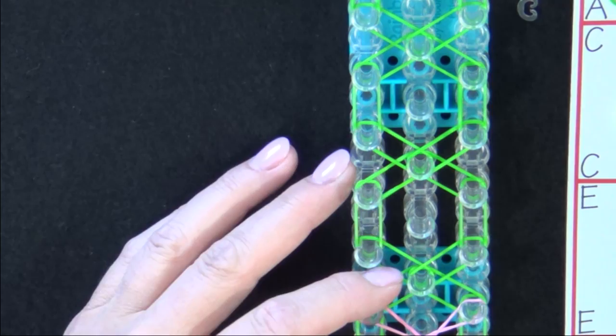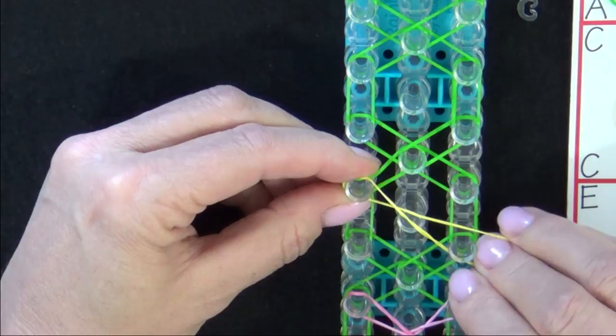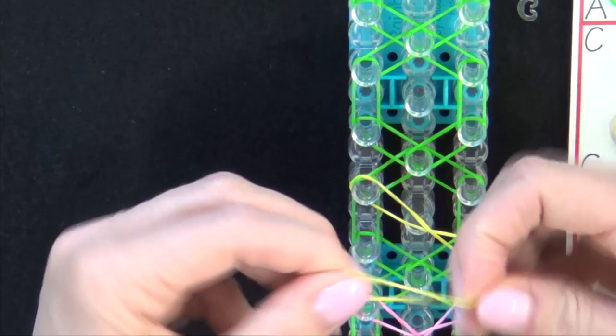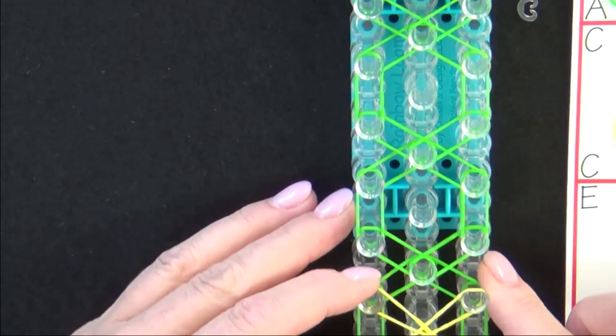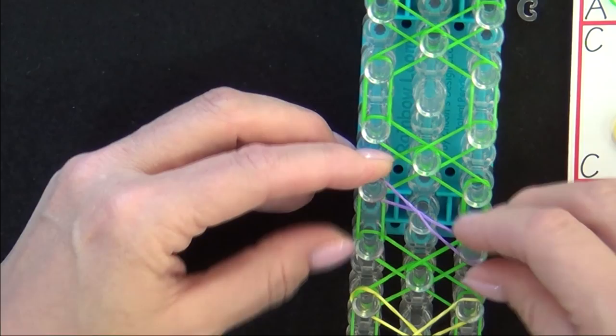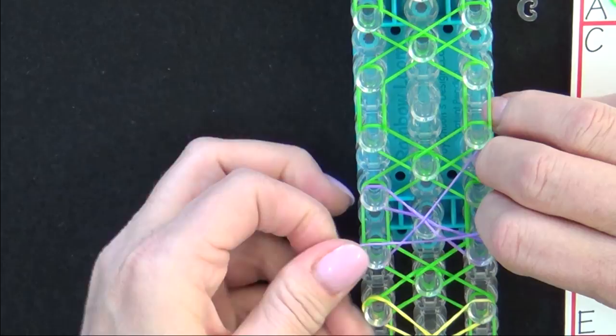You move to your second hexagon, use a C band, twist it into a figure 8, place it diagonally across the hexagon, and then we'll repeat this in the opposite direction with a C band to form that X shape. On our third hexagon we'll use a D band, twist it into a figure 8, and place it diagonally across, and then do it in the opposite direction, twist it to a figure 8, and place it across those two pins.